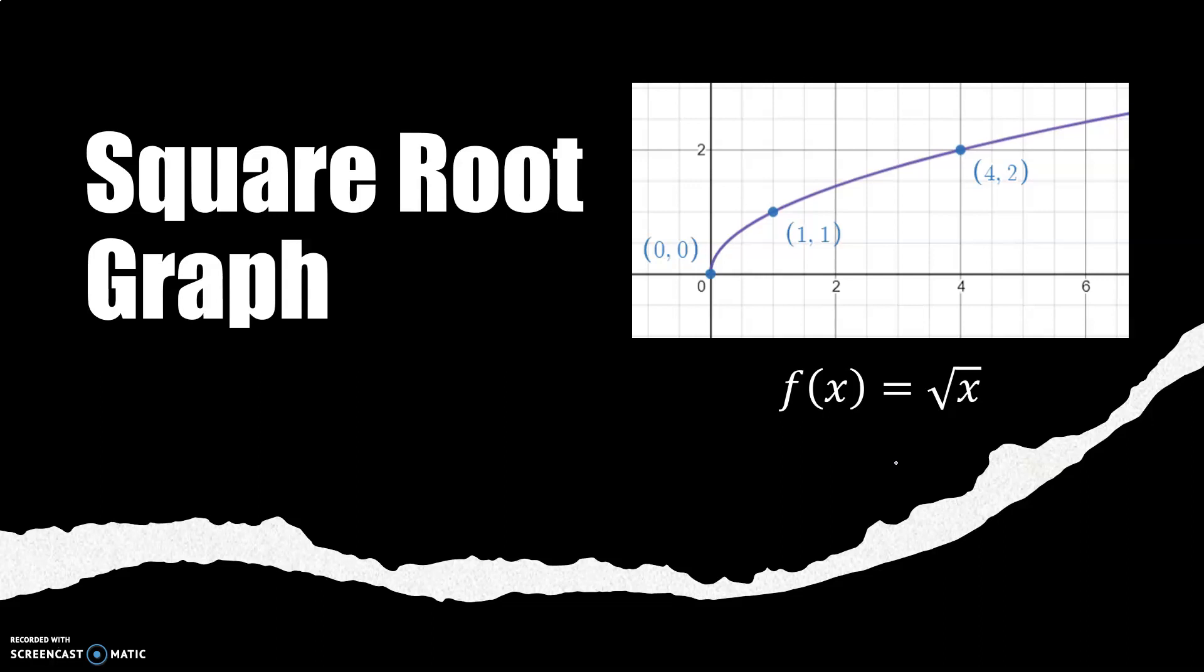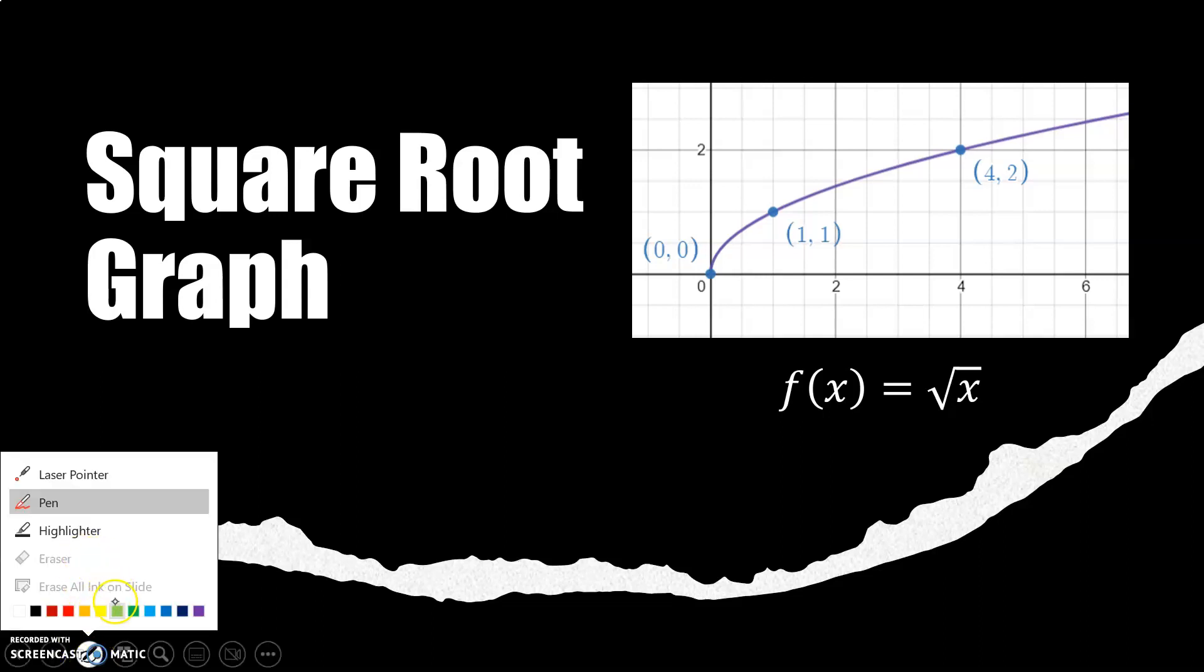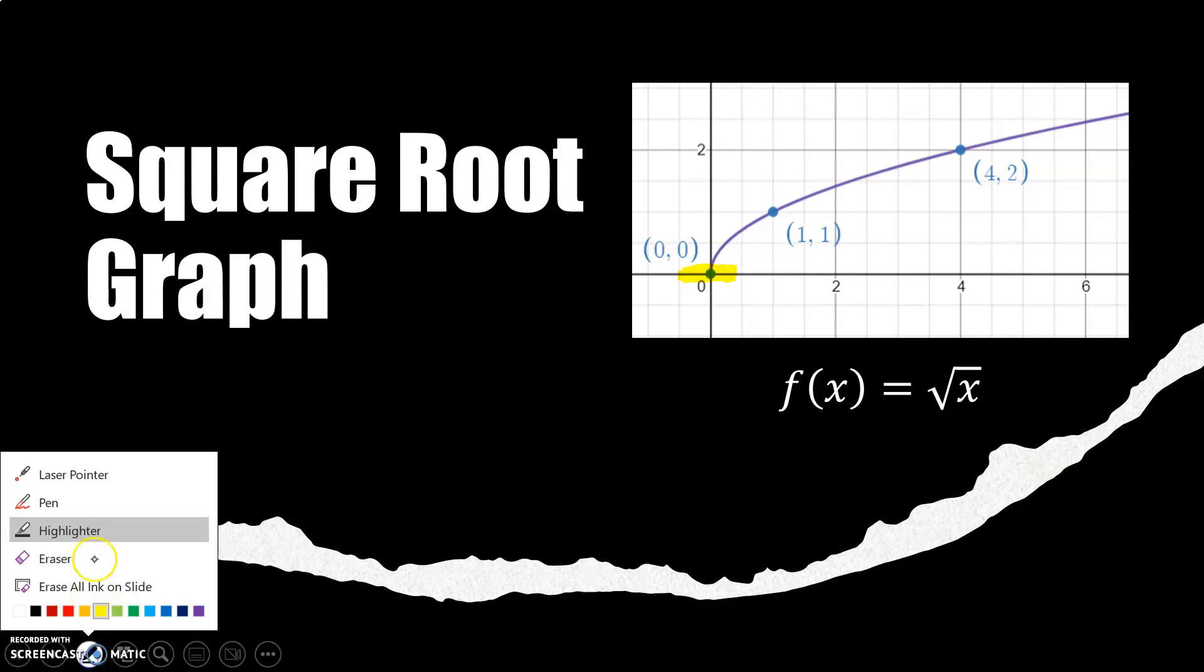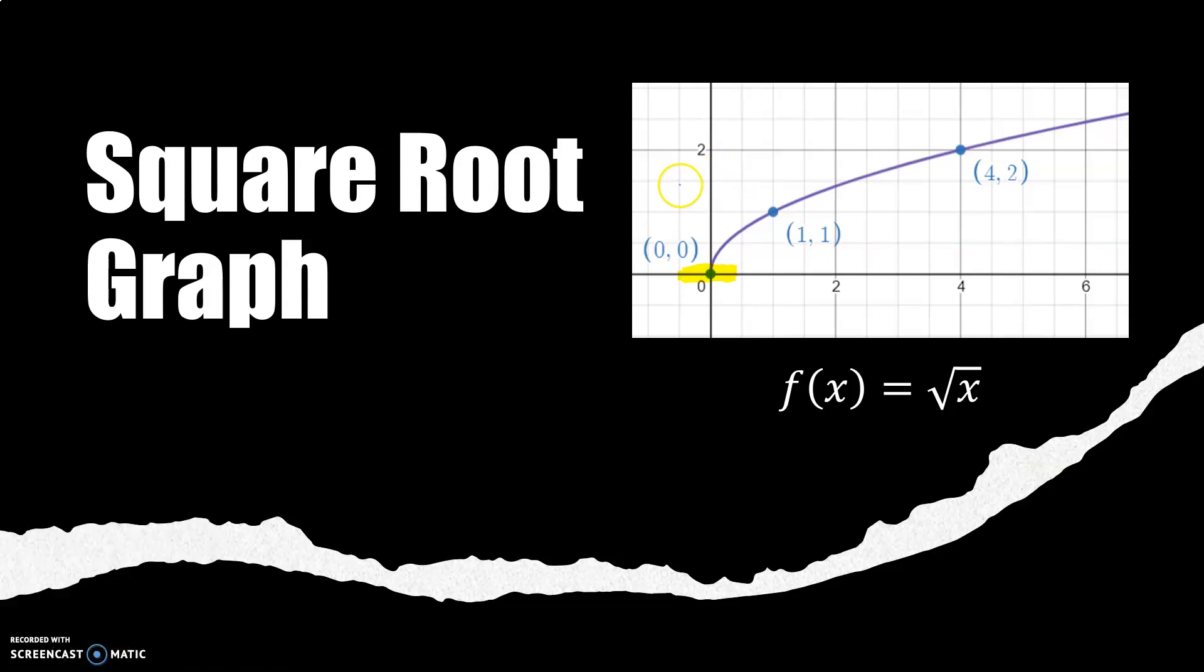The square root graph is a graph that rises up from the origin. The origin is the starting point on this graph. When you do translations you are going to pay close attention to this key point. This is the key point that you're going to use for translations.